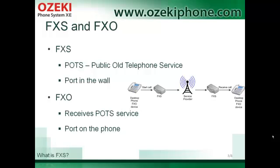FXS can deliver the Public Switched telephone service from the telephone company to the subscriber. It can be a port in your wall that allows you to connect an analog phone's FXO port into this port. The FXO port is placed on the device that is connected to the FXS port, and the phone receives the POTS service that is derived from the FXO port.